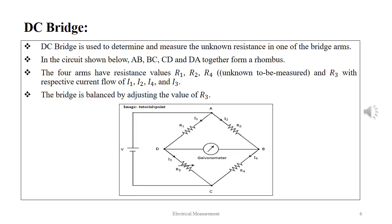As seen from the figure below, the DC bridge is used to determine and measure the unknown resistance in one of the bridge arms. AB, BC, CD, and DA are the four arms of a rhombus.